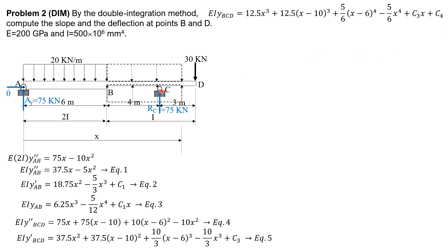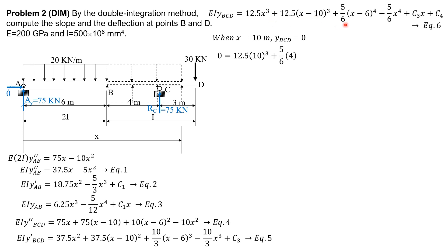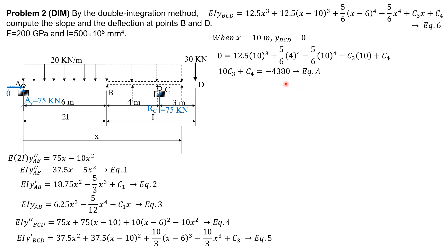For the boundary condition when X is 10, Y BCD equals zero (deflection at C is zero): 12.5 times 10 cubed plus 5/6 times 4 to the 4th minus 5/6 times 10 to the 4th plus C sub 3 times 10 plus C sub 4 equals zero. Simplifying: 10 C sub 3 plus C sub 4 equals negative 4380. Call this equation A.